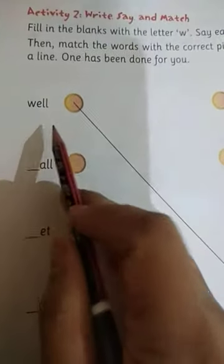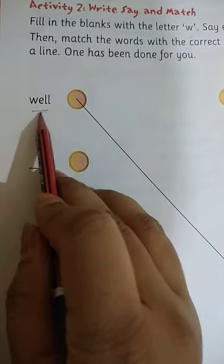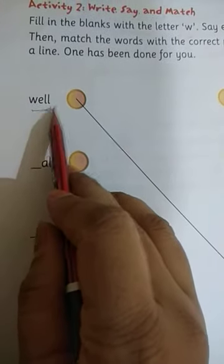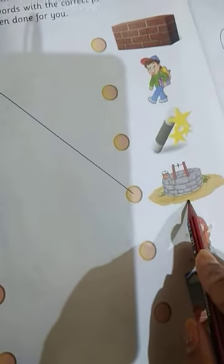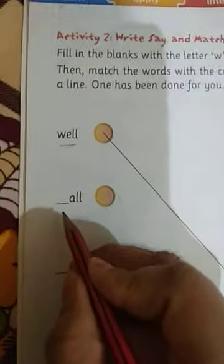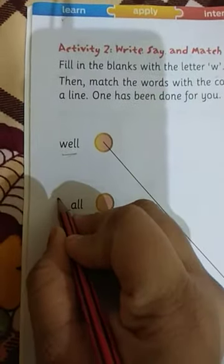Look here. First one is already done. Well. W-E-L-L. Well means kua. Now, come to the second word. We have to write W here.